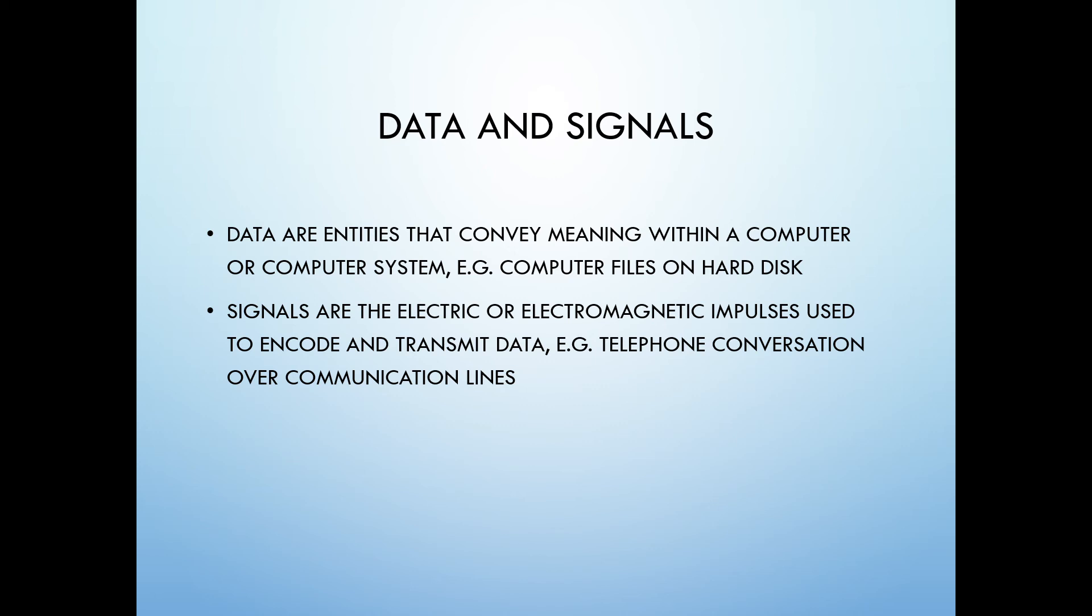Signals are the electric or electromagnetic impulses used to encode and transmit data. Common examples of signals include transmission of a telephone conversation over a telephone line or a live TV interview from Europe that is broadcast across the U.S. through a satellite system.